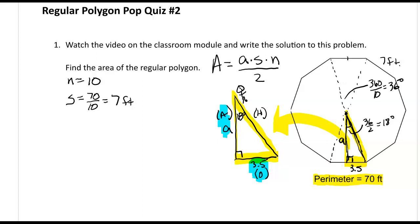So that's going to be tangent, so I've got tan 18 degrees is equal to opposite, so that's 3.5 over the adjacent, which is a. We'll put this over 1 so we can cross multiply.